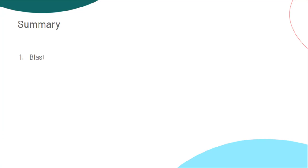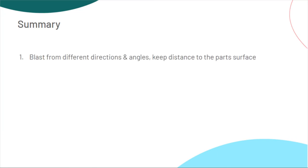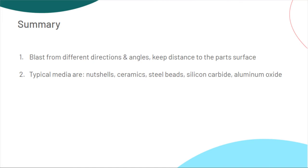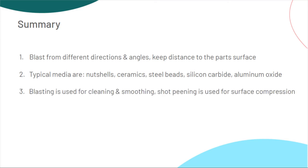What did you learn? First, it is necessary to blast from different directions and angles, as well as to keep a certain distance to the part's surface. Second, there are different media used for blasting — for example, nutshells, ceramics, steel beads, silicon carbide, or aluminum oxide.